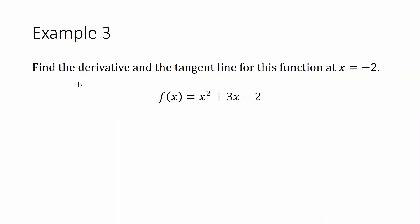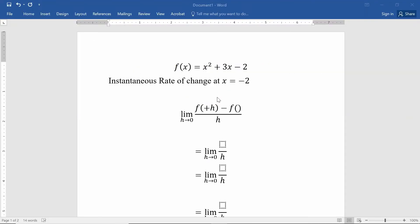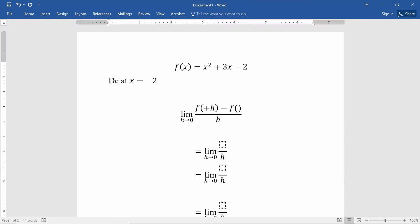Let's do example three. Example three asks us to find the derivative and the tangent line for this function at x equals negative two. We've already found the derivative at x equals one. Now let's find the derivative at x equals negative two, which is the instantaneous rate of change at x equals negative two. Our function is the same function: x squared plus 3x minus two. Since we know that the instantaneous rate of change of the function is the derivative, we can say that's the derivative of f at x equals negative two.